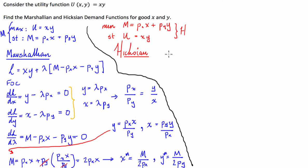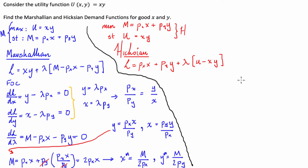For our Hicksian demand we set up our Lagrangian using our objective function — what we're trying to minimise, which is expenditure — subject to the utility constraint. So L equals PX·X plus PY·Y plus the Lagrangian multiplier times (U minus XY). We then take the first order conditions just like we did for the Marshallian demand.